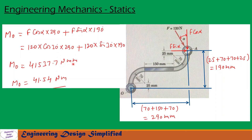To convert this into Newton-meters, we divide by 1000, giving M_O equal to 41.54 Newton-meters.